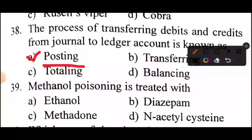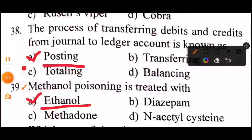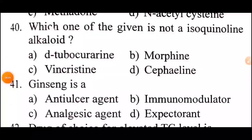Question 39 of 60: Methanol poisoning is treated with? Answer is Option A.